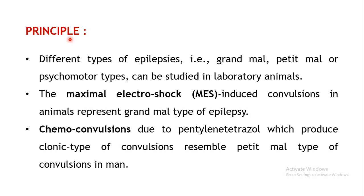Coming to the principle of the experiment, there are different types of epilepsies — for example, grand mal type, petit mal epilepsy, and psychomotor type. These different types of epilepsies can be studied in laboratory animals using several models. The first model is maximal electroshock-induced convulsions, where a shock is given to the animal, producing convulsions that represent the grand mal type of epilepsy in human beings.